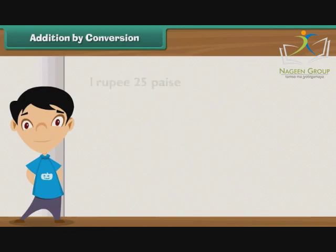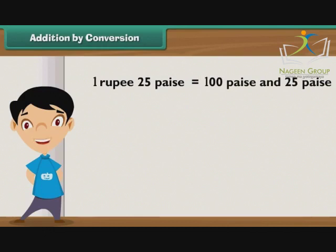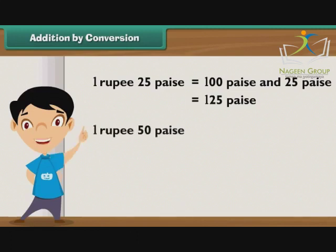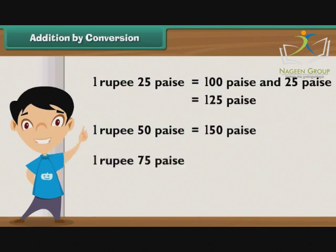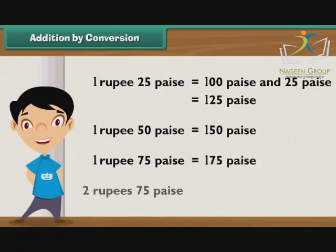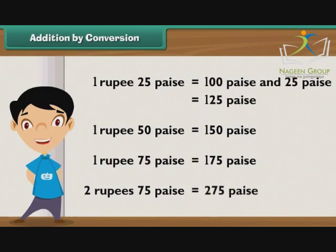So one rupee 25 paise is the same as 100 paise and 25 paise — that is 125 paise. By the same logic, one rupee 50 paise is equal to 150 paise. One rupee 75 paise may also be represented as 175 paise, and two rupees 75 paise is equal to 275 paise.